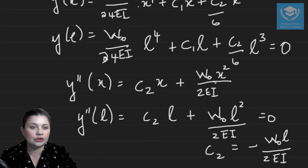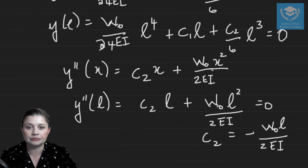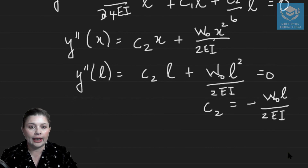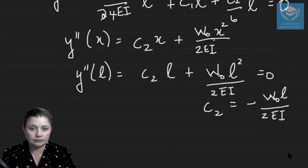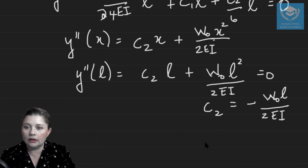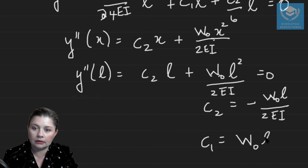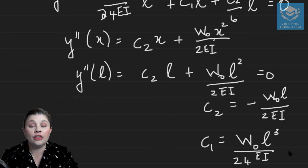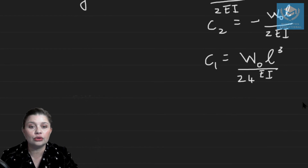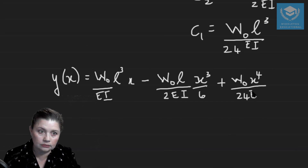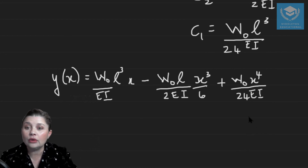You can find C1 from the first boundary condition equation. Then you take those two constants and substitute them back into your deflection equation, giving you the final equation for deflection at any point on the beam.